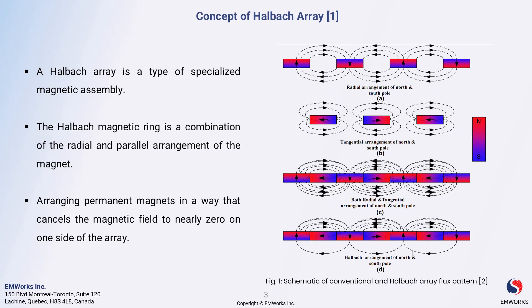This clever design maximizes the magnetic field in one direction while minimizing it in the other. The real magic happens when we arrange the permanent magnets in such a way that the magnetic field on one side of the array is nearly zero.